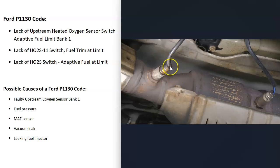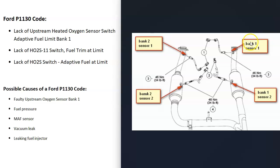The upstream bank one sensor one oxygen sensor could have gone bad and is reporting bad data back to the onboard computer. You can locate the bank one sensor one upstream oxygen sensor on your particular Ford and run some tests on it to see if it's working correctly. I made some videos on how to test these sensors — I'll put a link below. First thing to do is go check that bank one sensor one oxygen sensor and either test it or replace it.